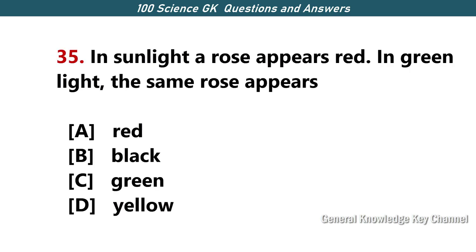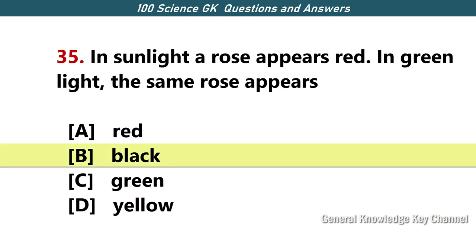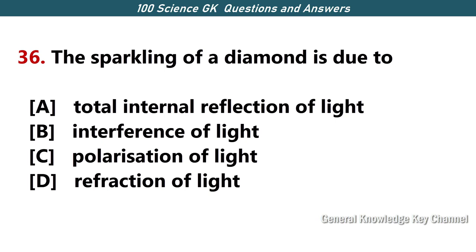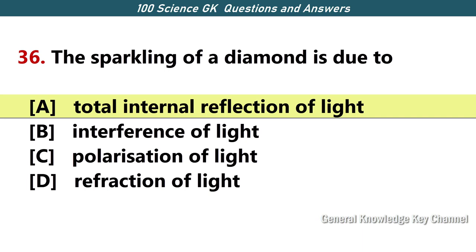In sunlight a rose appears red; in green light the same rose appears — Answer B — black. The sparkling of a diamond is due to — Answer A — total internal reflection of light.